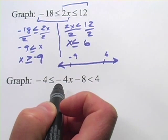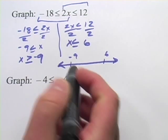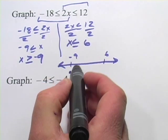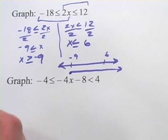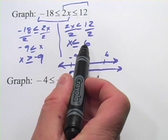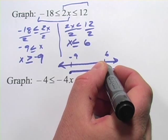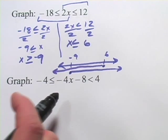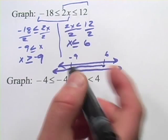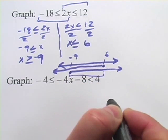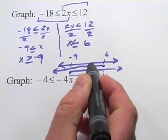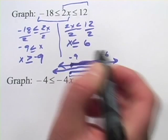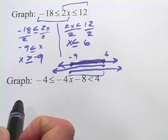X is greater than or equal to negative 9. I'll put this just below the graph so we can think about it first. We'd have the point negative 9 filled in because of the 'or equal to', and then everything greater stretching off that way. X is less than or equal to 6 would be the point 6 and everything stretching off in the less-than direction. What we want with a compound inequality is the area of overlap, so on the number line it's this point, this point, and all the stuff in between — that's the correct graph.